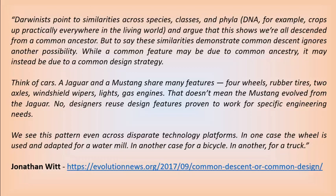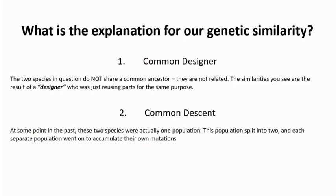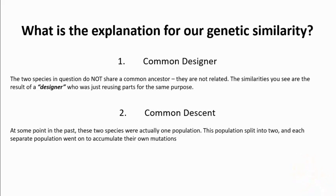We see this pattern even across disparate technology platforms — in one case the wheel is used and adapted for a water mill, in another for a bicycle, and in another for a truck. So there are basically two explanations for our genetic similarity. Number one: we share a common designer. The two species in question do not share a common ancestor, they are not related, and the similarities you see are the result of a designer reusing parts for the same purpose.